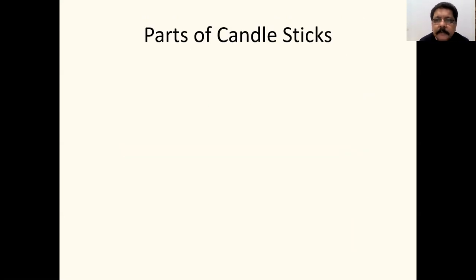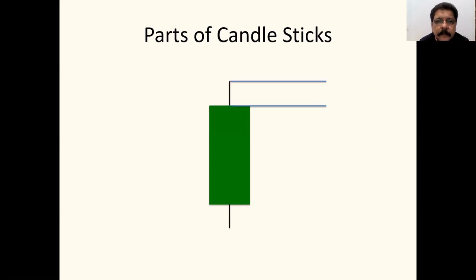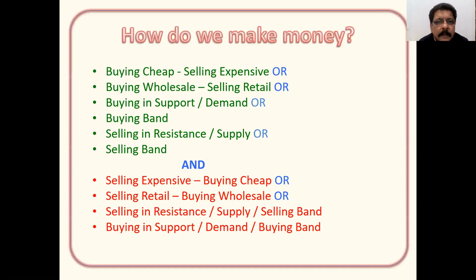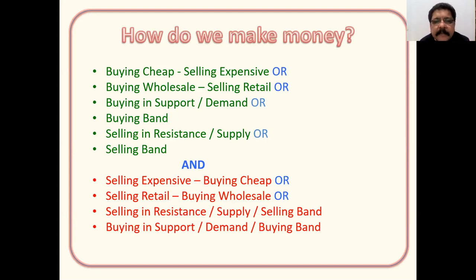Parts of a candlestick: the upper wick or tail at the top, the body in the middle, and the lower wick at the bottom. Buying cheap and selling expensive — buying at wholesale price and selling at retail price — or buying at support/demand and selling at resistance/supply. In the buying band there is more demand than supply, and in the selling band supply exceeds demand so prices come down.